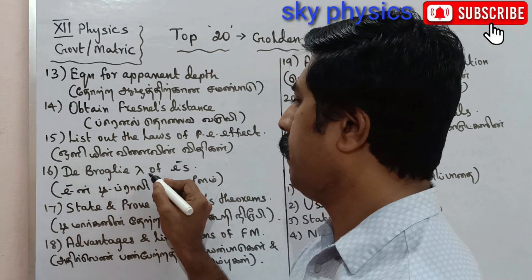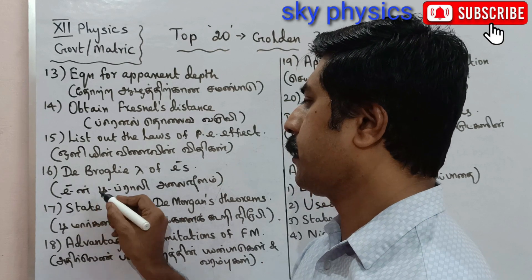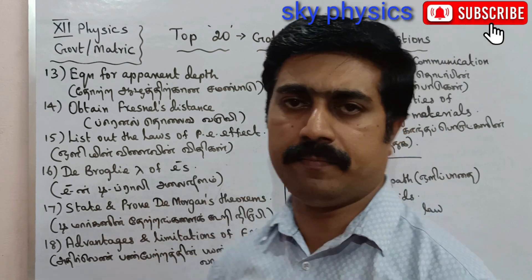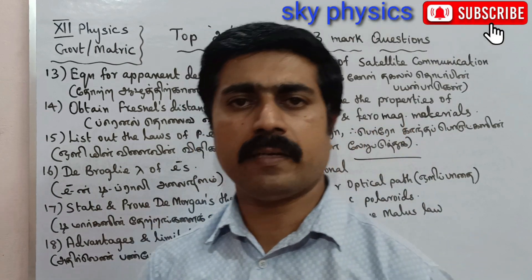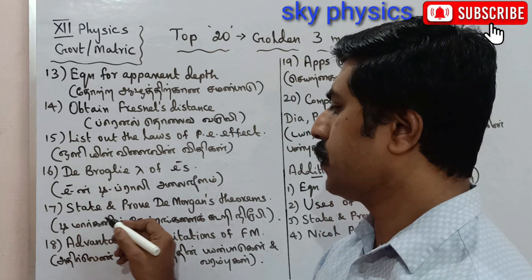16th question: De Broglie wavelength of electrons. (Tamil: Electronic De Broglie Alaineeela — under derivation.)